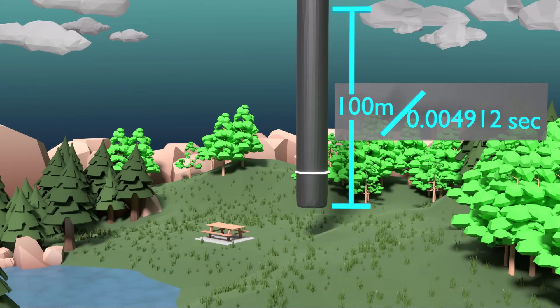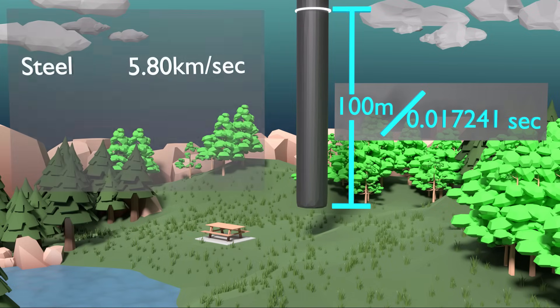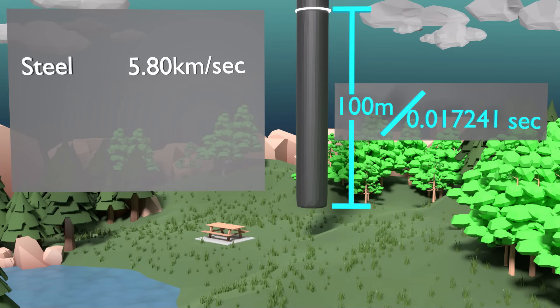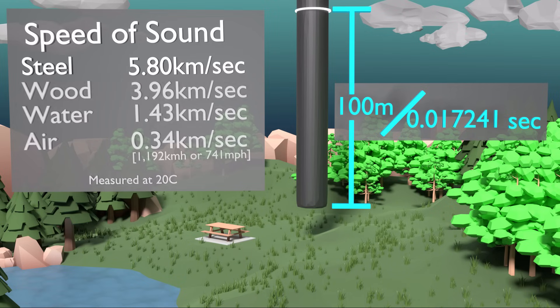Specifically, in steel, this rate of bouncing and reacting to the adjacent atoms travels up the bar at a rate of 5.8 kilometers per second. This speed is considered the speed of sound in steel, and it varies depending on the material.